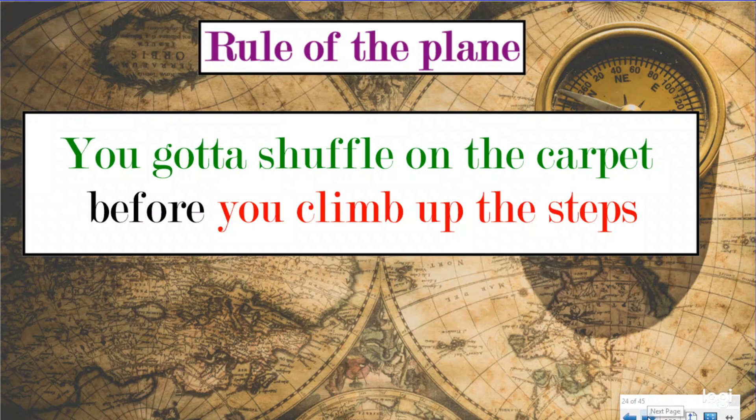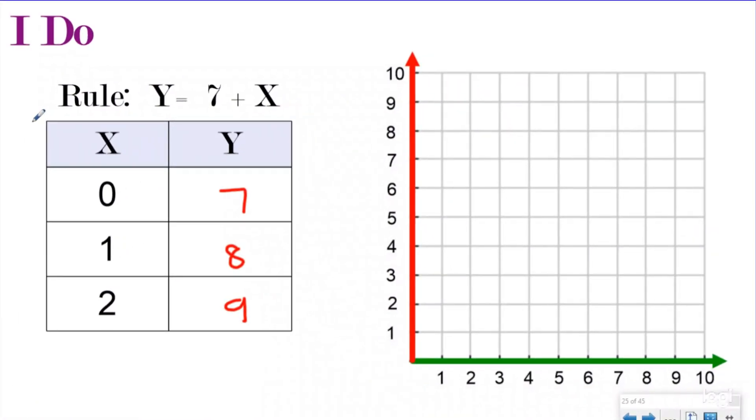If you look, this is the pattern chart we just did following the rule, right? When X was zero, seven plus zero was seven, one plus seven was eight, and two plus seven was nine, right? So this is the pattern chart we just did together.